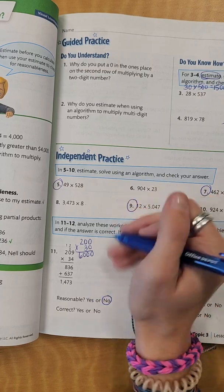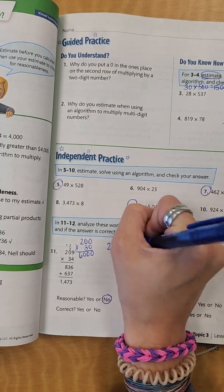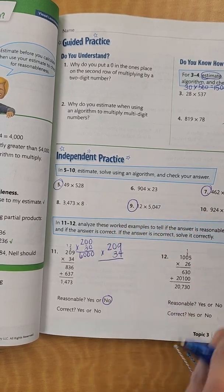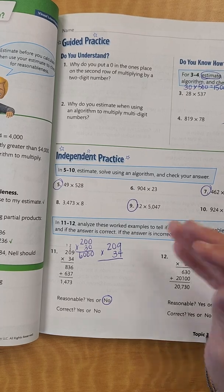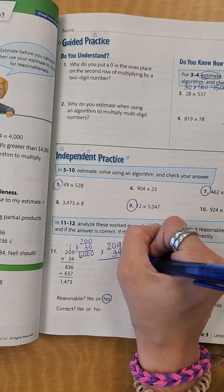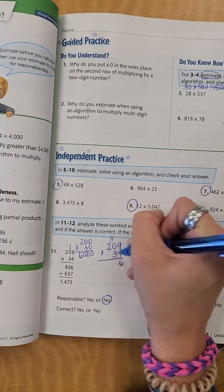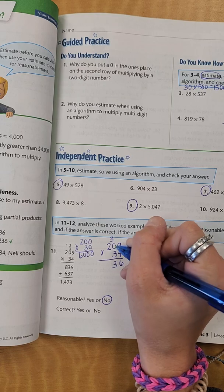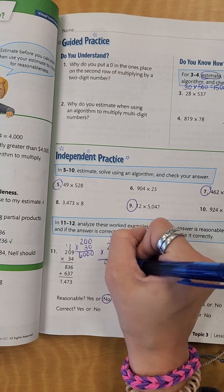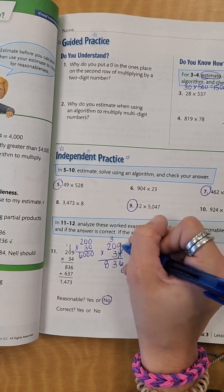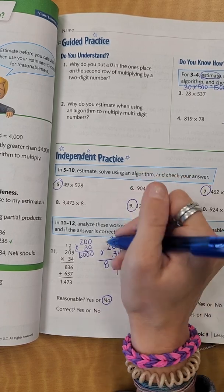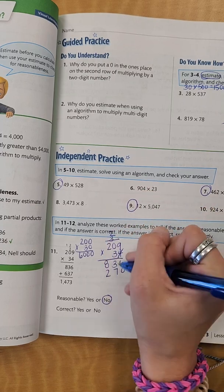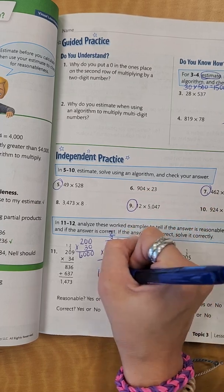So now we're going to actually work it out. So I have 209 times 34. Sometimes reworking it for yourself is the best thing to do. So I know that 9 times 4 is 36, put down my 6, regroup my 3. 4 times 0 is 0, plus 3 is 3. 4 times 2 is 8. Put down my 0, cross out my 4. 3 times 9 is 27, put down my 7, regroup my 2. 3 times 0 is 0, plus 2 is 2. 3 times 2 is 6.